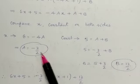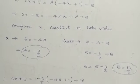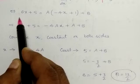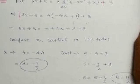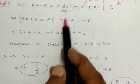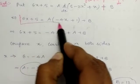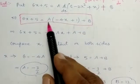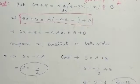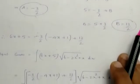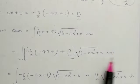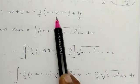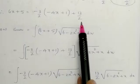By shifting and taking LCM, B value is 13/2. Now replace these two values, A and B: A = -3/2 and B = 13/2. So 6x + 5 equals (-3/2) into (-4x + 1) plus 13/2.